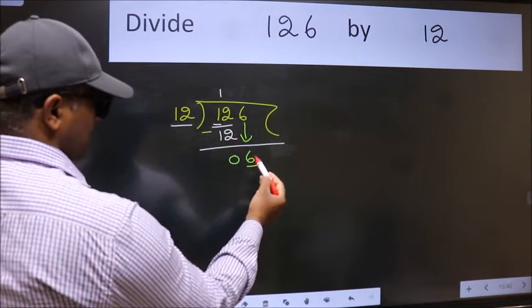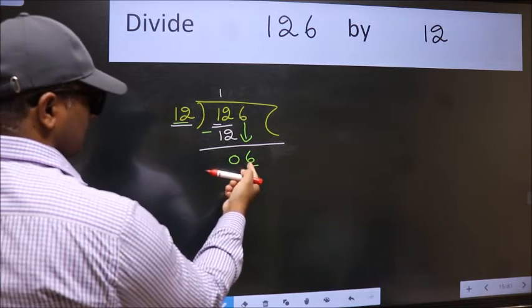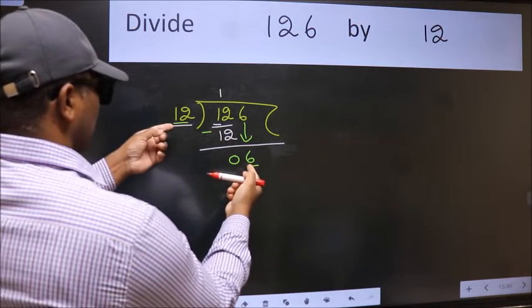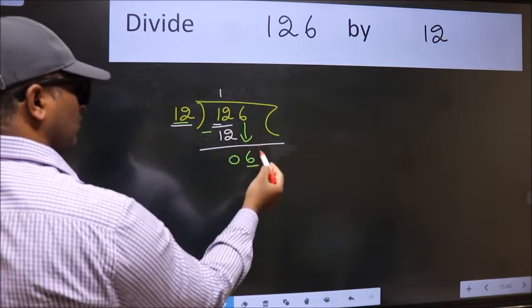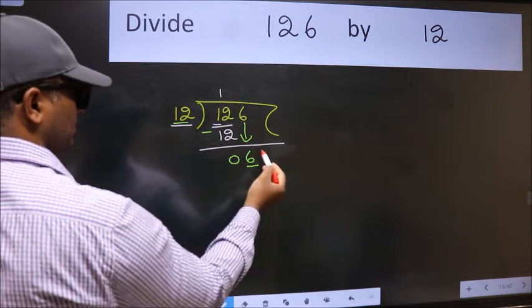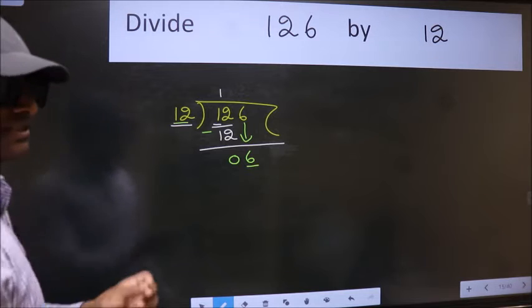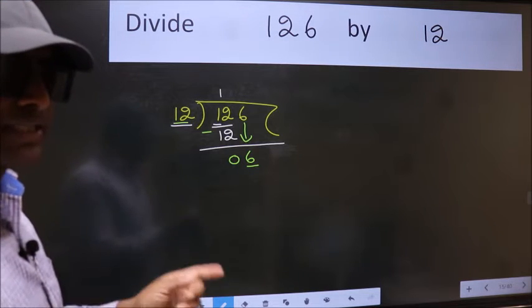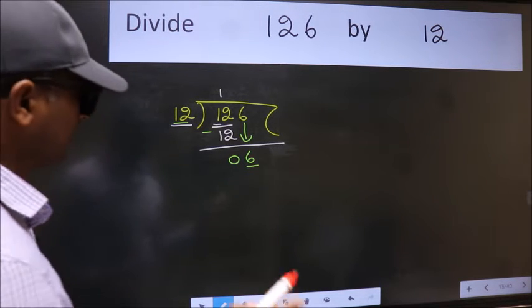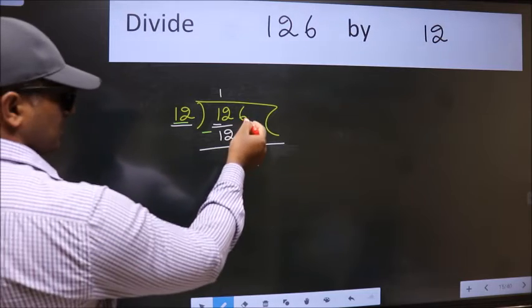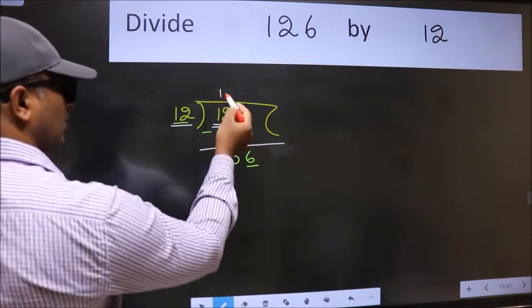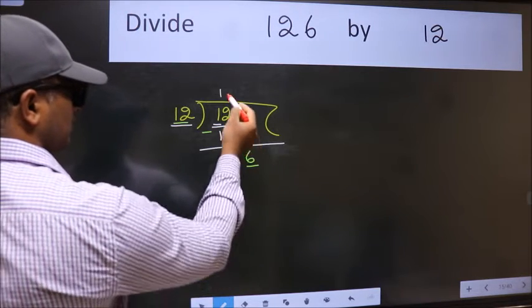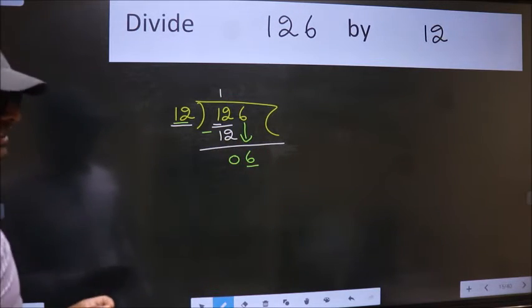Here we have 6 and here 12. 6 is smaller than 12. So what many do is they directly put dot, take 0, which is wrong. Why is it wrong? Because just now you brought this number down and in the same step you want to put dot, take 0, which is wrong.